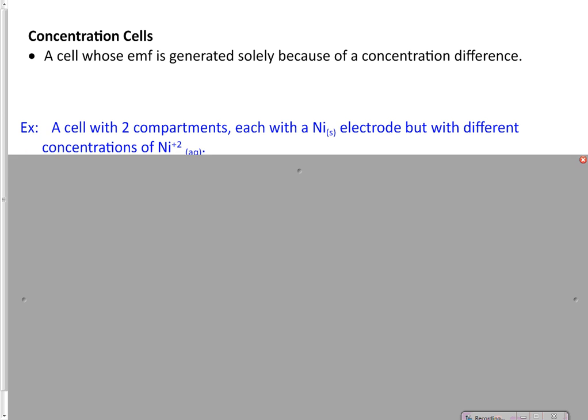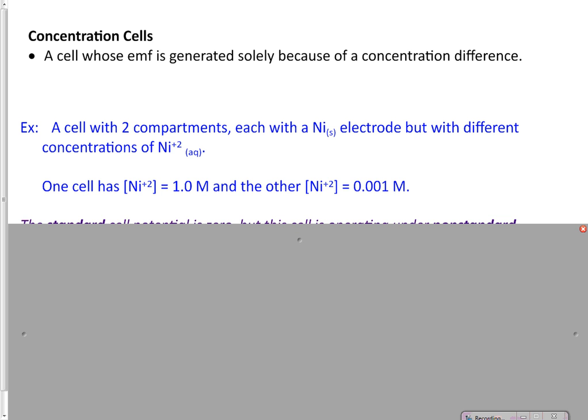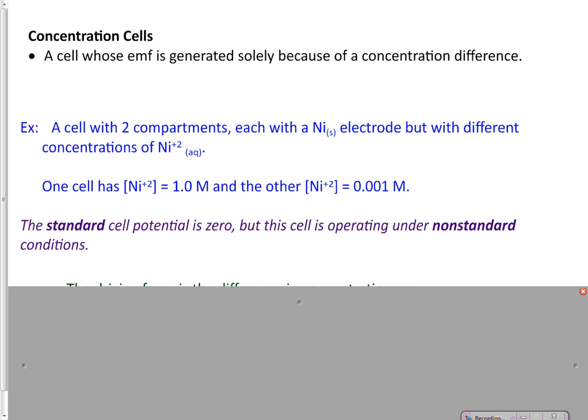So here's an example problem. We have a cell that has two compartments, each with a nickel electrode, but the nickel concentration, the solution that it's sitting in has two different concentrations. So one of them has a concentration of one molar, which would be considered standard, but the other one is 0.001 molar. So because there is a difference in concentration, this is now considered a concentration cell.